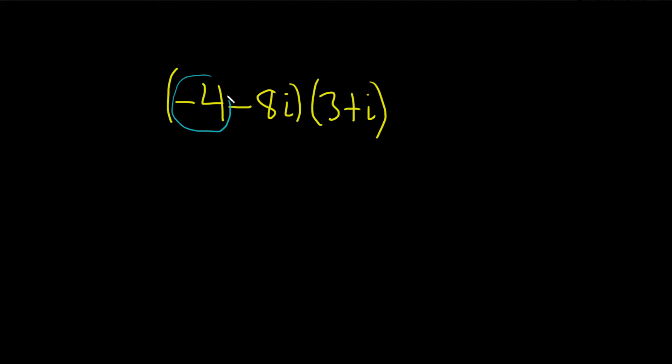We're going to take this negative 4 and multiply it by both of these. Then we'll take the negative 8i and multiply it by both of these. So negative 4 times 3 is going to give us negative 12, and then negative 4 times i is negative 4i.